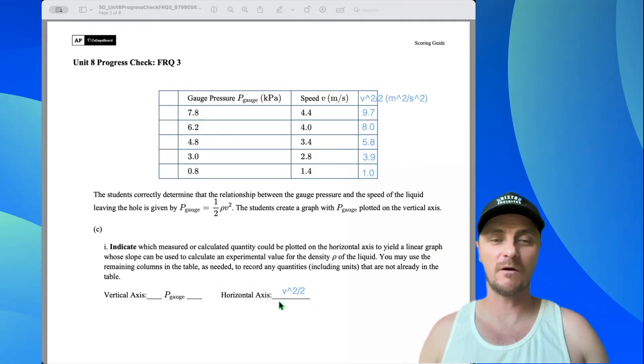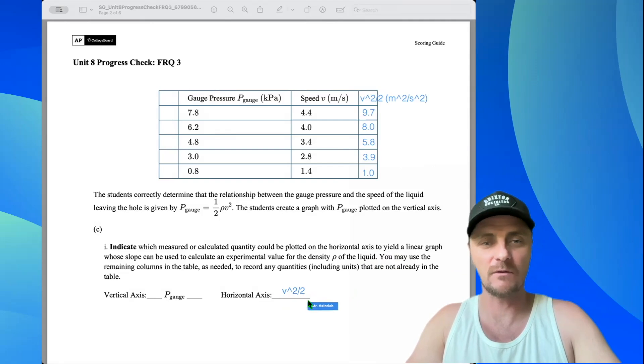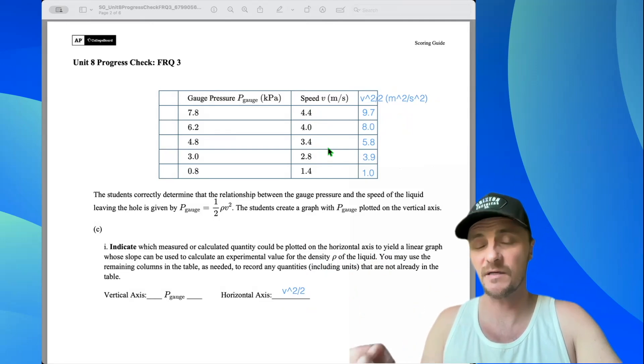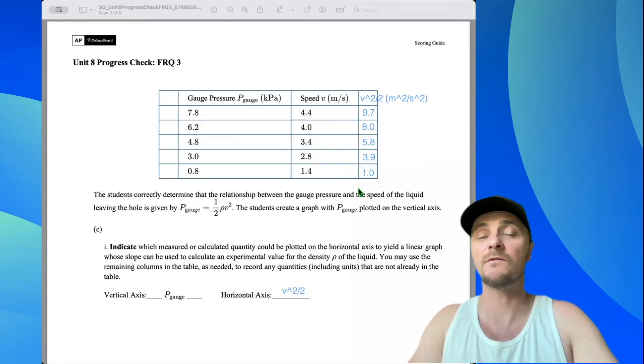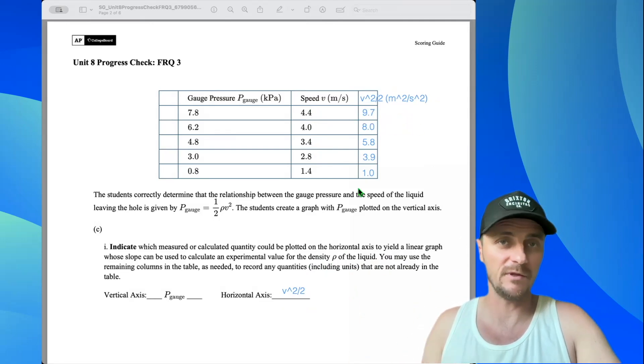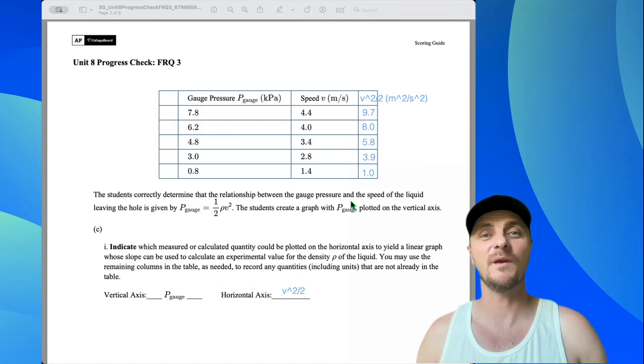There's C1 all done. I have v squared over 2 on the horizontal axis. I place that at the top of this header. There's the unit. They do want us to include units if we're going to have a new quantity, which we do. I took each one of these numbers, squared them and then divided them by 2 to arrive at these values, which I rounded to the nearest tenth place. Let's go on to C2 and graph this information.